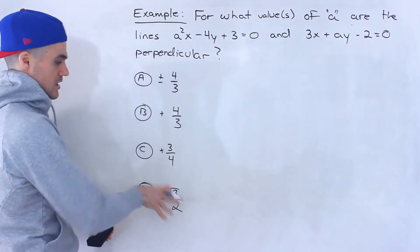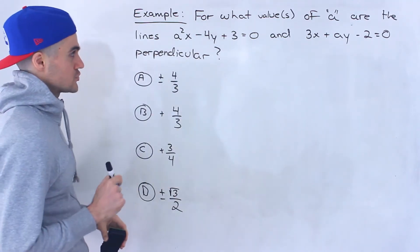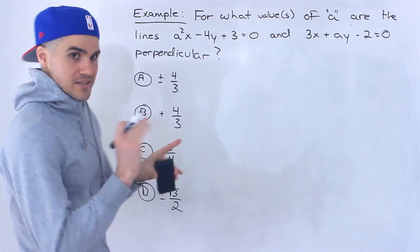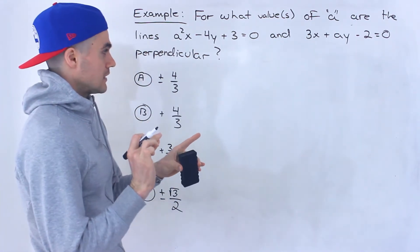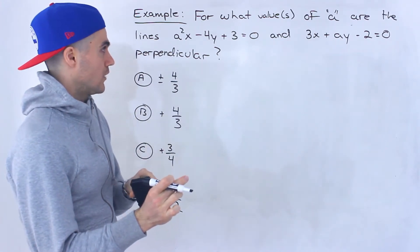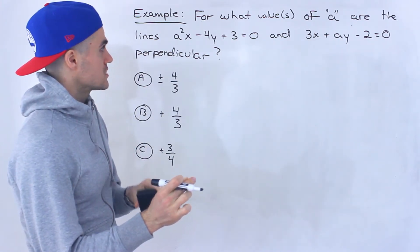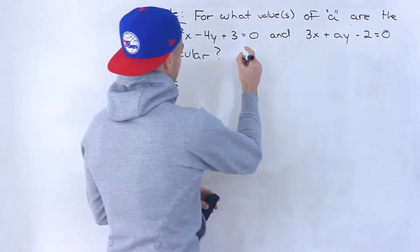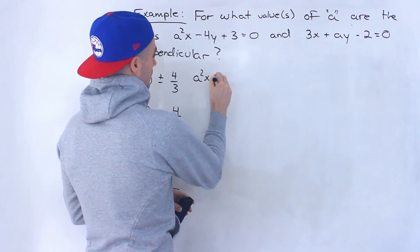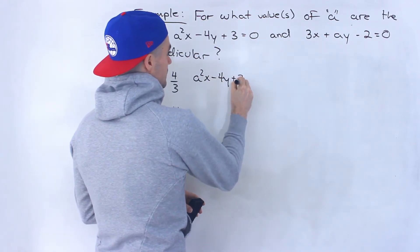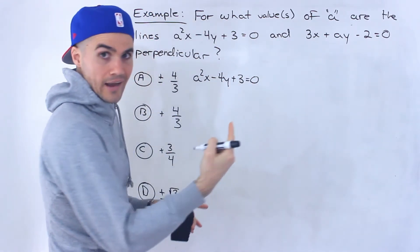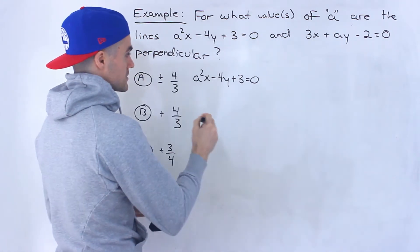We have these four different choices. Remember, when two lines are perpendicular, it means that their slopes are negative reciprocals of one another. So what we can do is take both of these lines and find what their slopes are, putting them in Y equals MX plus B form.